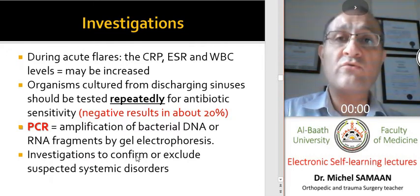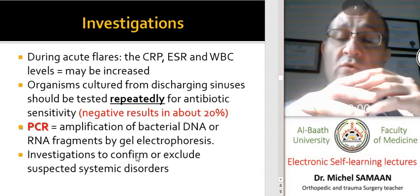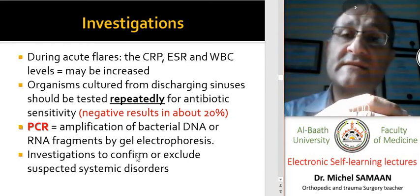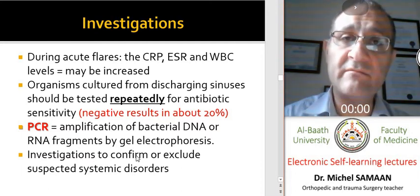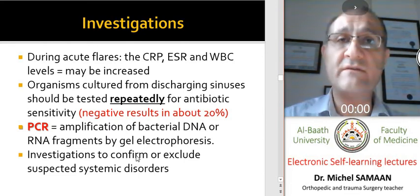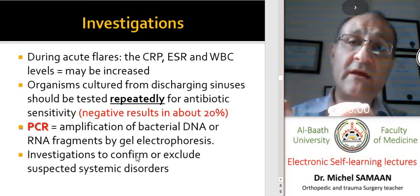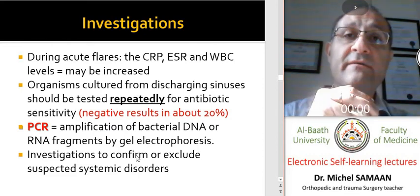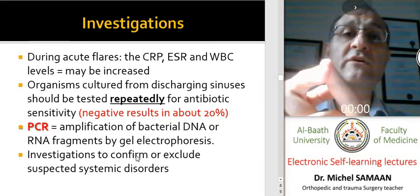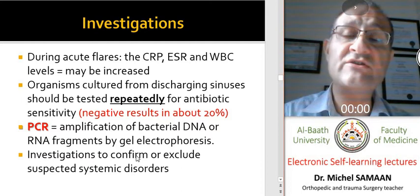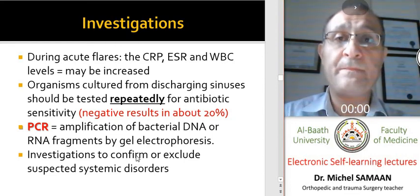Blood investigations are usually normal. There are two clinical phases. In the open sinus phase, pus is evacuated from the infected area and signs and symptoms are usually minimal — no fever, no pain, no redness. When the sinus closes, pus accumulates in the area of infection, causing acute signs and symptoms: swelling, redness, local heat, and elevated temperature. Blood investigations such as CRP and white blood cell count typically rise during this period.